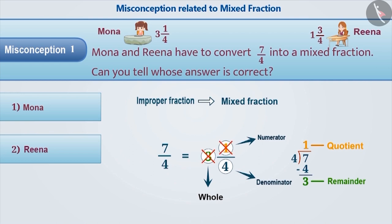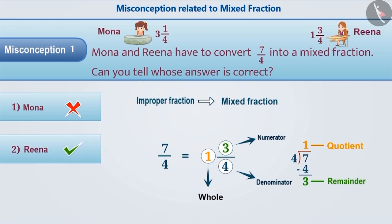That means Mona's answer is incorrect. The correct way is to write the quotient in the place of whole number and the remainder in the place of numerator. Therefore, the correct mixed fraction is 1 3/4. That means option 2 is correct.